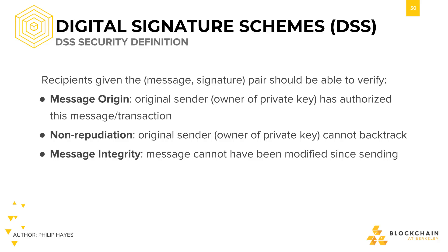First, given a message and its signature, as well as a copy of the sender's public key, the recipient should be able to identify the message origin. Since the message has been signed by the sender's private key, this shows that the original sender has authorized this message.